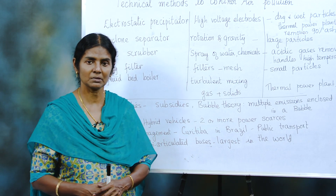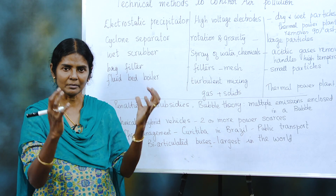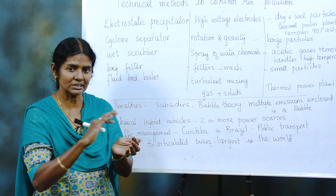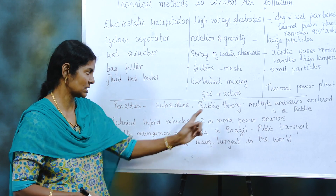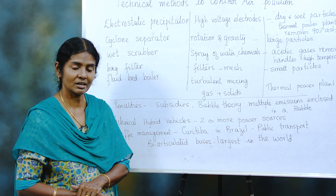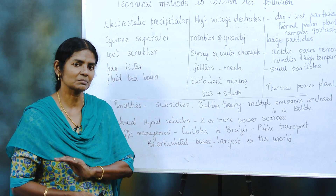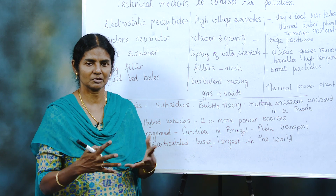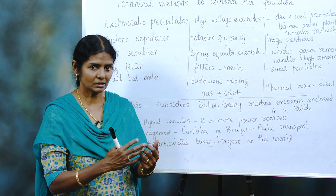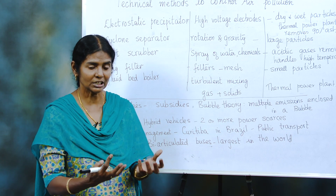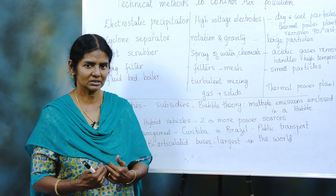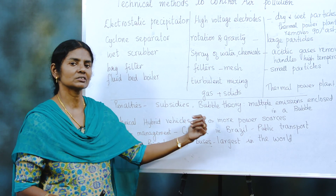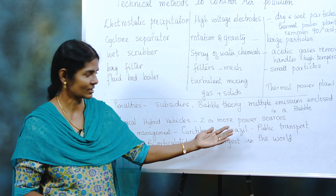Next is bubble theory. From the word bubble, don't be misled — it means all the emissions from one plant or industry are imagined to come under the umbrella of a bubble, so multiple emissions fall into one bubble. And technical hybrid vehicles: hybrid means two or more power sources combined together — for example, Toyota Prius operates electrically at start and then is powered by diesel or petrol. Combinations of CNG or biodiesel are also possible.